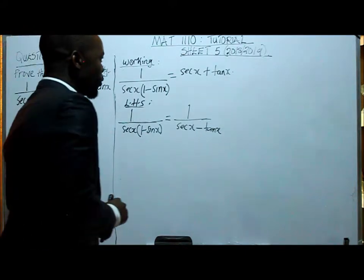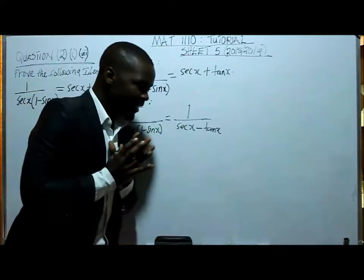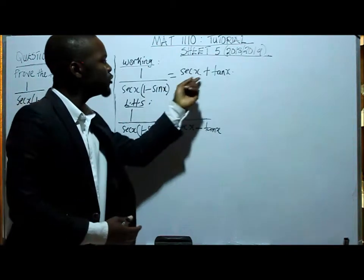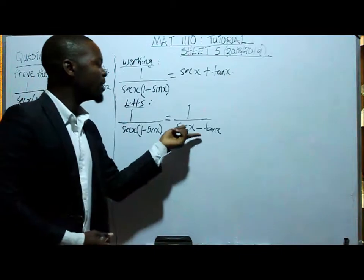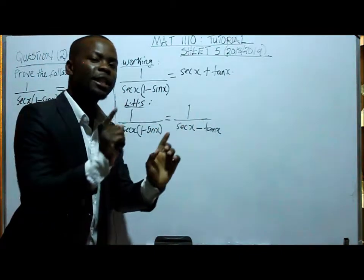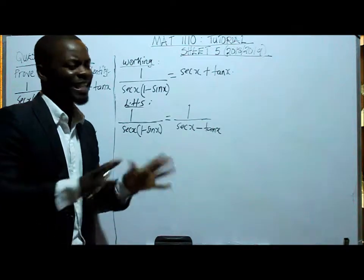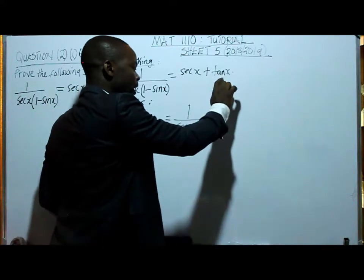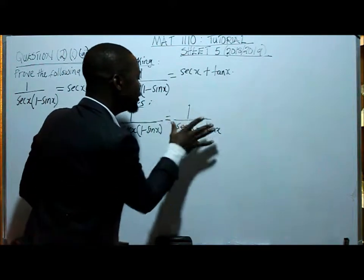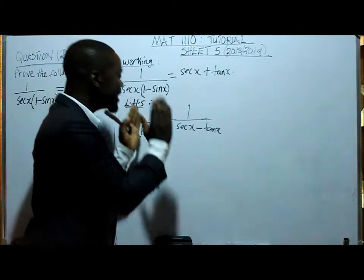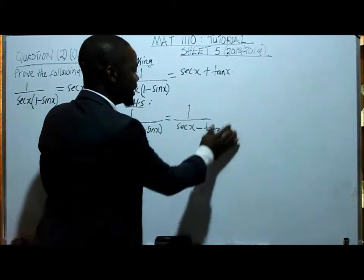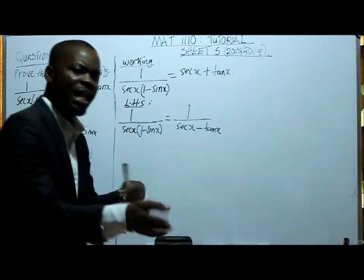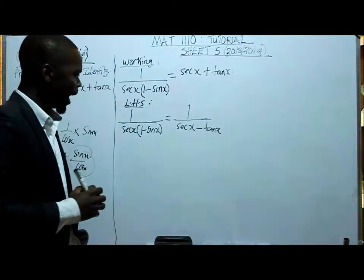Now from here, as I said in other videos, as you are solving the identities, make sure that you are referring to your right hand side. So from here, there's no need of us converting this component to the basic trig ratios of sin and cos. No, because the right hand side is having the component of sec and tan. And here we have reached a stage where we are having sec and tan.